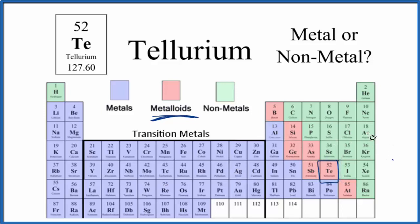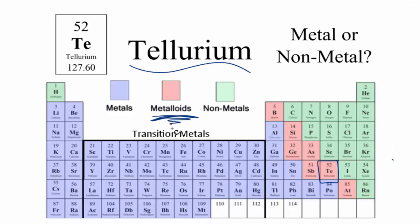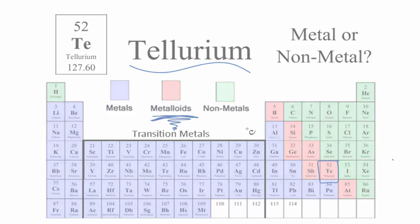Probably best, when you're trying to memorize this periodic table, memorize these metalloids, and you'll know on the left you have metals, with the exception of hydrogen, and on the right you have nonmetals. This is Dr. B talking about tellurium, which is a metalloid. Thanks for watching.